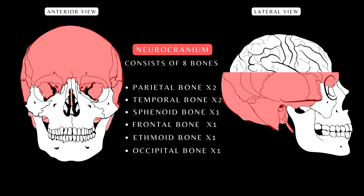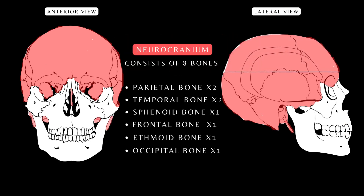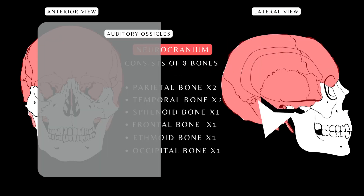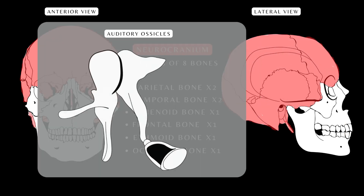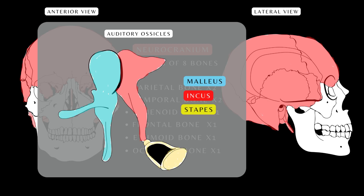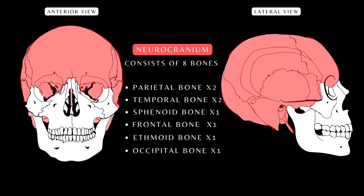Inside the auditory meatus and within the petrous part of each temporal bone are the three auditory ossicles: the malleus, incus, and the stapes — known to be the smallest bones in the body. Although they do not participate in the structural integrity of the skull, they do play a vital role in the transmission and amplification of sound. We will look at these bones in another tutorial.